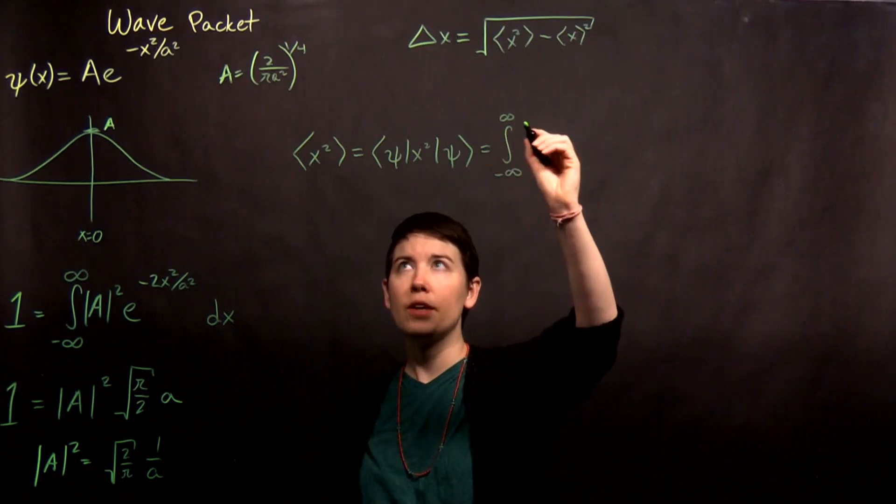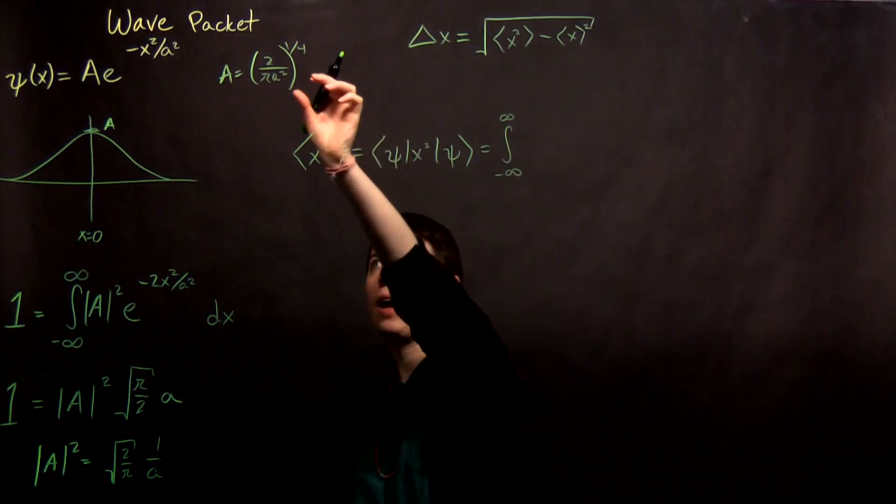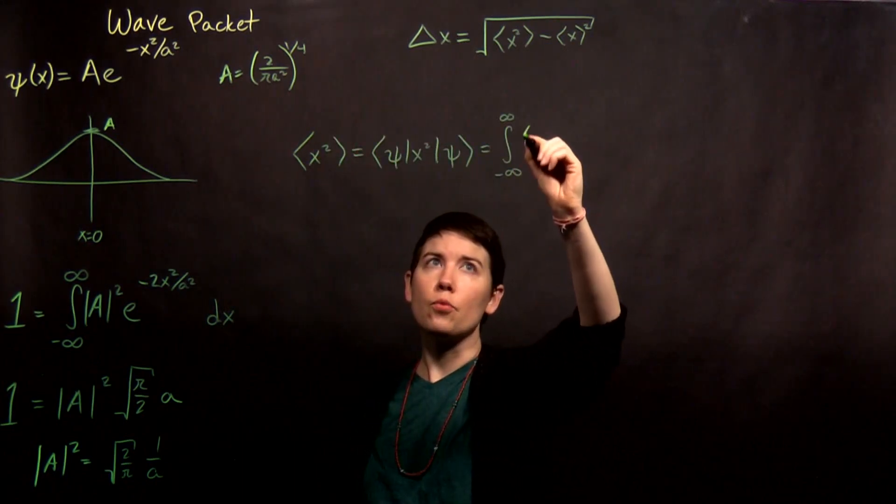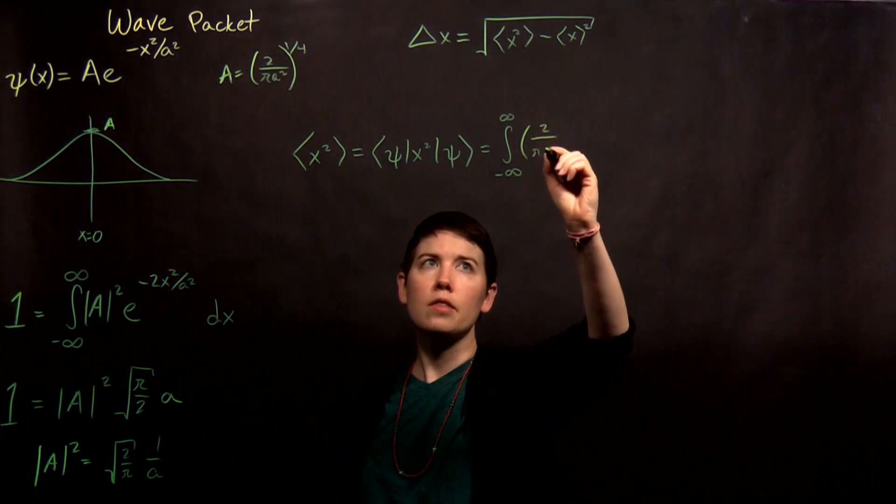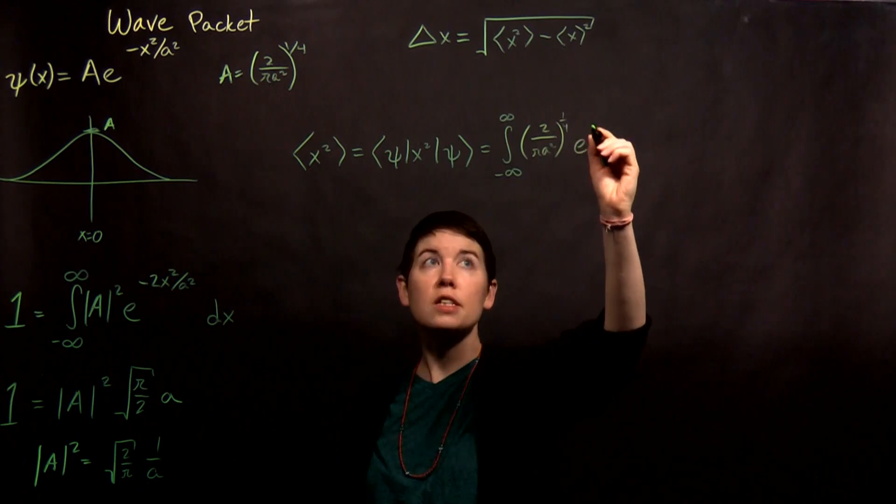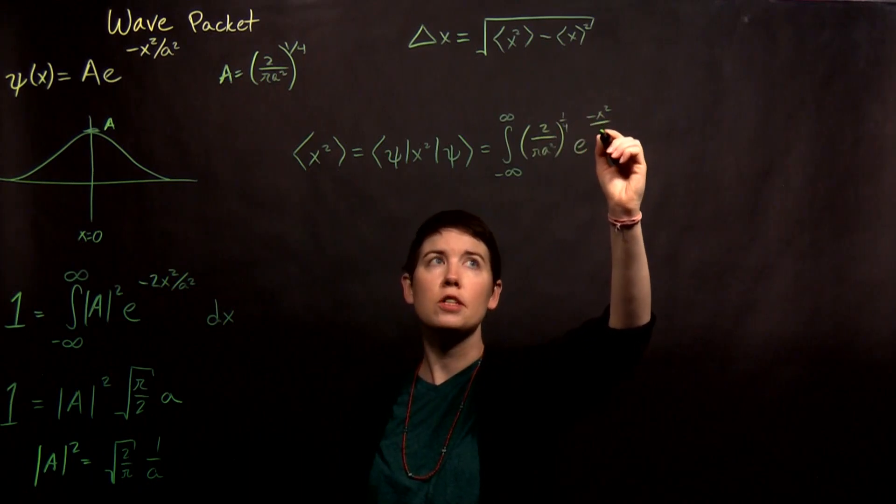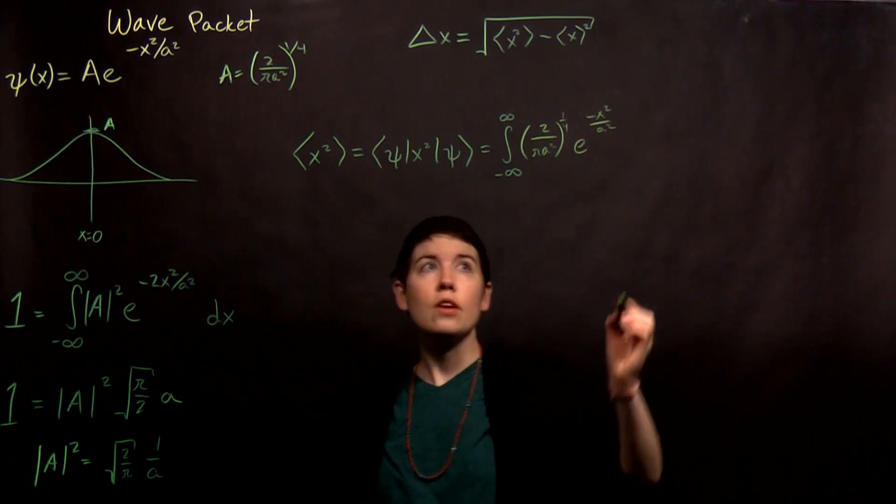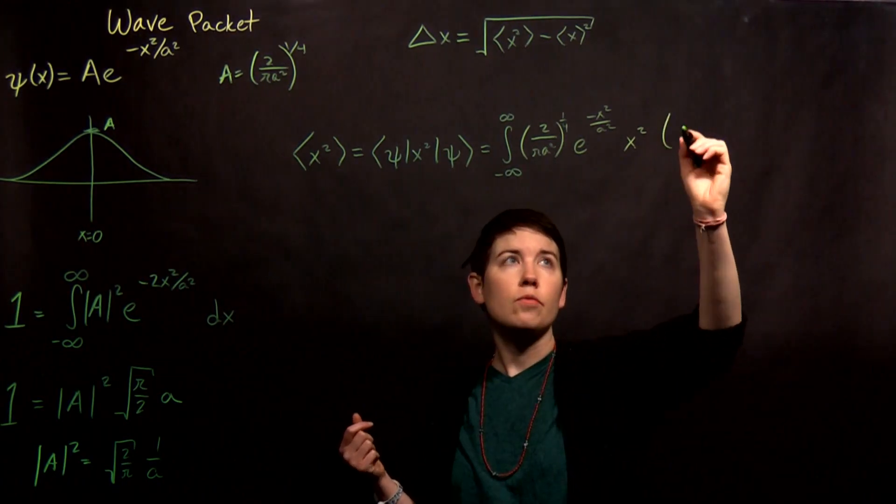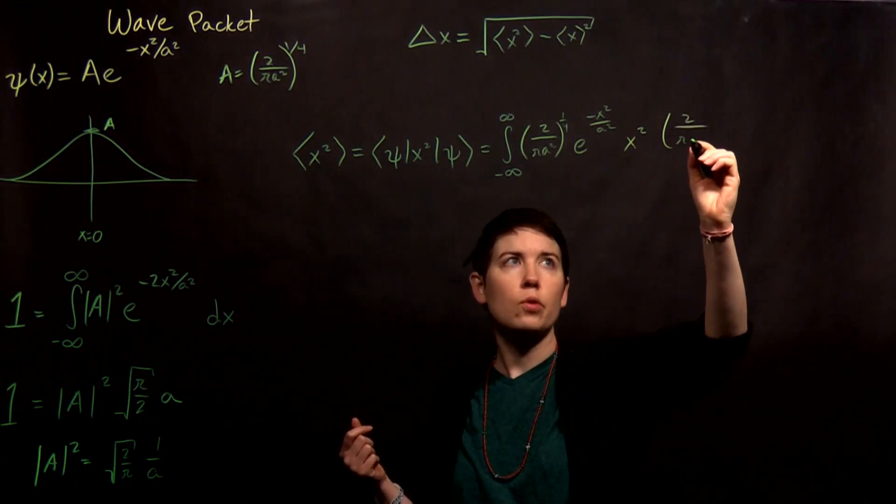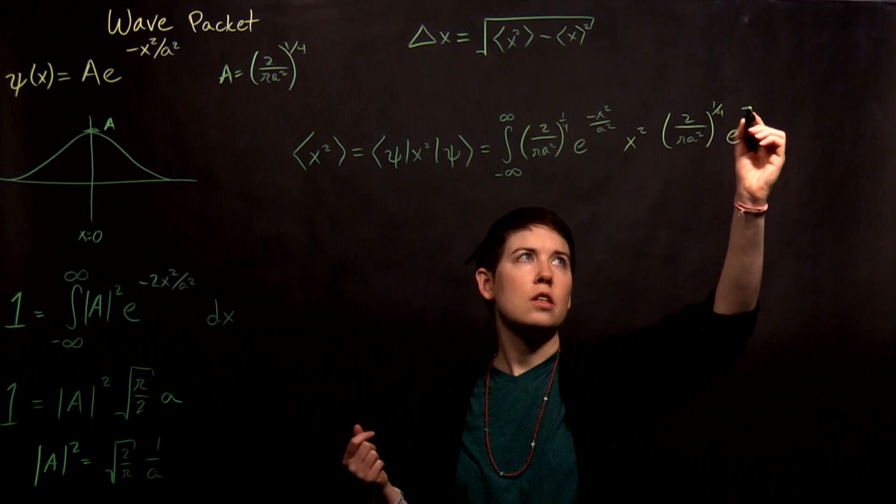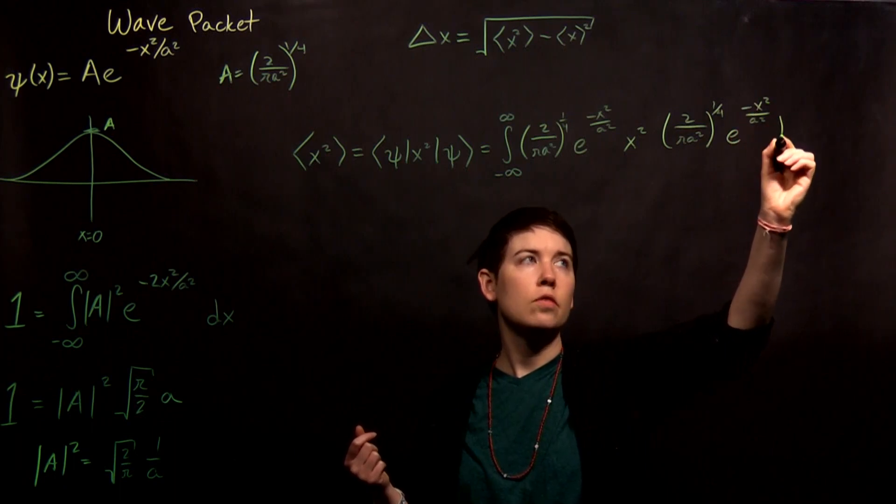So now we are going to take our wave function, and so first for the bra, we would have what our psi star is. Now, notice that A here is real, so we just get to write that down as it is, 2 over pi a squared to the one-fourth. And then we have our wave function, which again is entirely real, so we don't have to worry about any sort of complex conjugate. And then we have x squared, where our operator is just literally x squared. And then we have the same function again. So 2 over pi a squared to the one-fourth power. You can see why it's kind of nice to write it this way. e to the negative x squared over a squared dx.